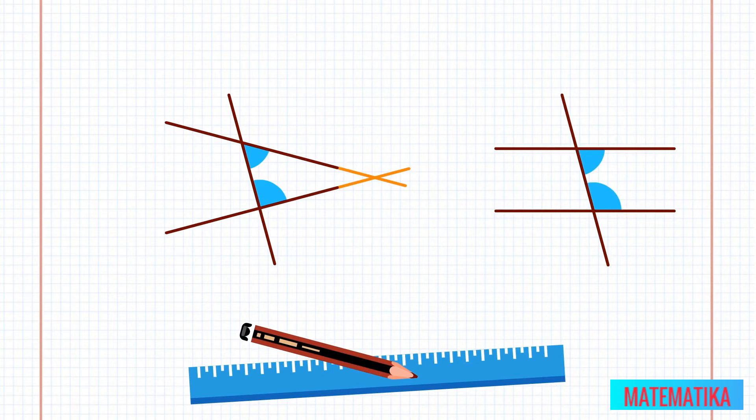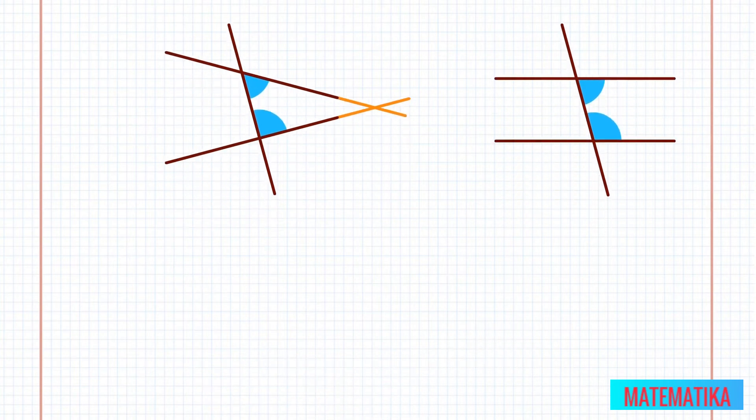For any line and a point not on that line, Euclid shows us that only one line can be constructed through that point that will be parallel to that line. All other lines will eventually intersect with that original line.